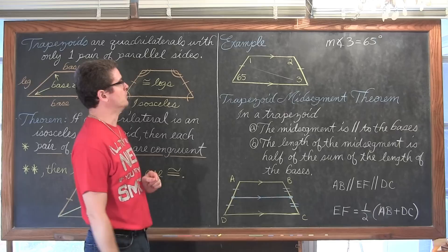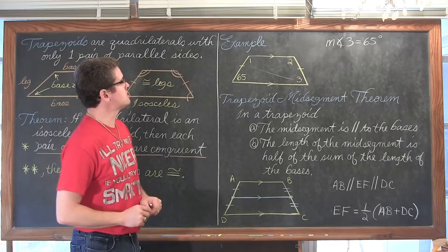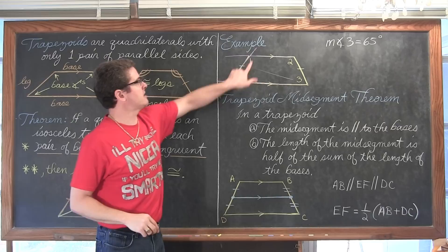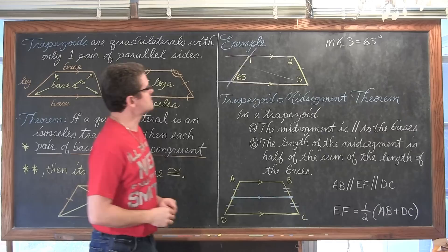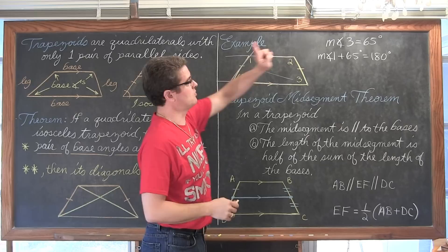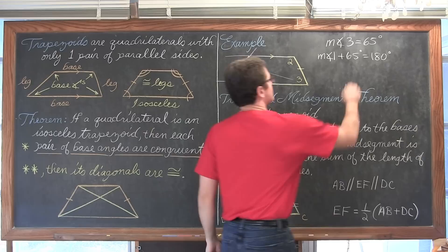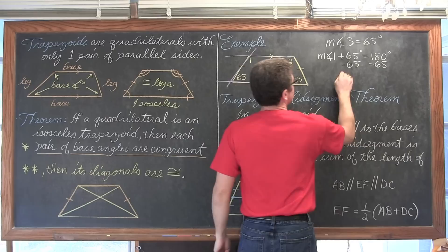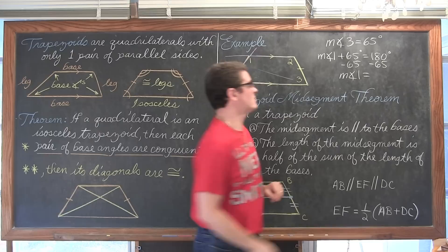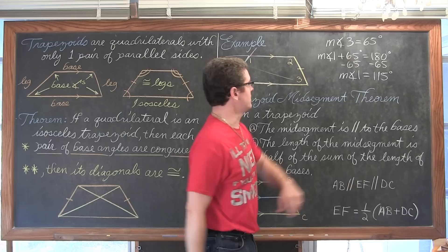What is the measure of angle 1? If I can find angle 1, I will also know angle 2. When you have two parallel lines cut by a transversal, those same-side interior angles are supplementary. So the measure of angle 1 plus 65 degrees must equal 180 degrees. Subtracting 65 from both sides: 180 minus 65 is 115 degrees.